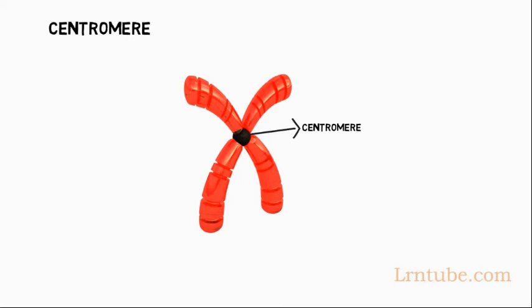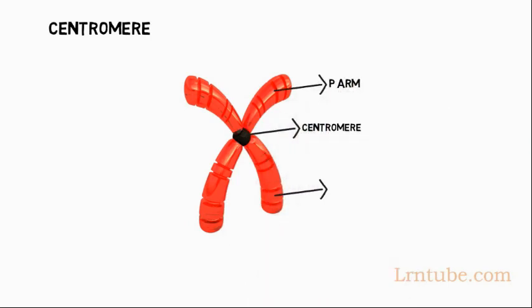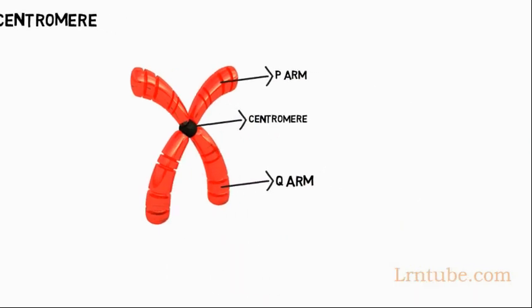Centromeres are composed of heterochromatin, which is in turn composed of tandem repeat sequences that contain high GC content. They are a little bit tighter and almost look like a little ball in the middle of two sticks. The centromere is what separates the chromosomes into what is called, for human chromosomes, the P and Q arms.